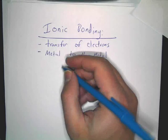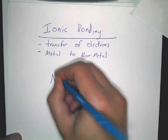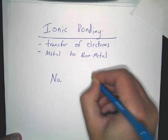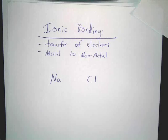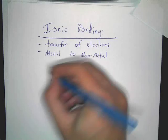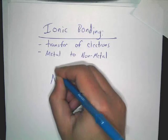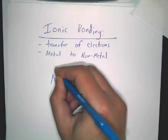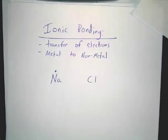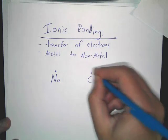Now let's look at this: sodium and chlorine. How many valence electrons does sodium have? It's got one. Sodium is Na. Chlorine has seven.